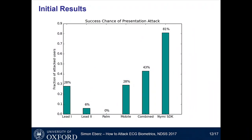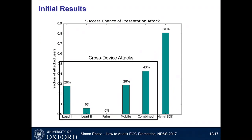Now let's look at the results. This plot shows the fraction of users that were successfully attacked. The rightmost bar shows the success rate using data collected directly on the NYMI band — the straightforward attack — which was successful in 81% of cases, roughly the same rate as legitimate users authenticating themselves. The other five bars are the cross-device attacks, where success rates are quite a bit lower and, depending on the device, we were not successful at all. This is something we naturally wanted to improve.